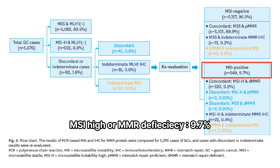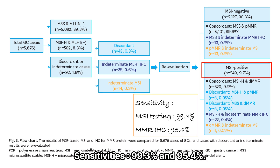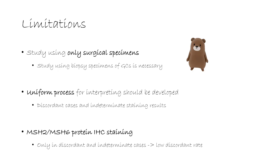Finally, MSI-positive gastric cancer — either MSI-high or MMR deficiency — was observed in 549 of 5,676 cases, or 9.7%. Of these, 47 were added for re-evaluation. The sensitivities of the MSI test and MMR immunohistochemistry were 99.3% and 95.4%, respectively.